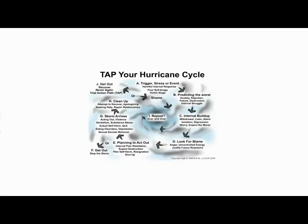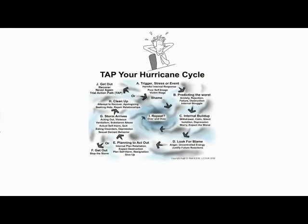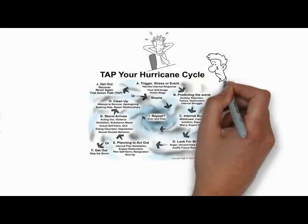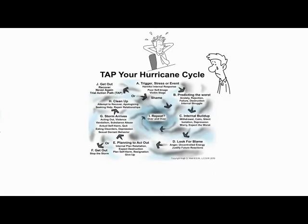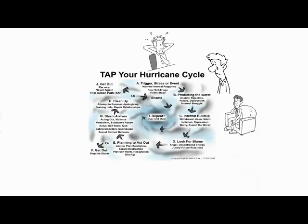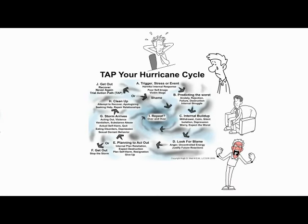To follow the hurricane cycle, we start alphabetically at the top and move in a clockwise motion down the right, toward the bottom, and then back up the left. A: Trigger — stress or event, harmful internal response, poor self-image, or victim stage. B: Predicting the worst — anxiety, rejection, failure, destruction, or internal struggle. C: Internal buildup — withdrawal, calm, silent isolation, depression, worry, or expecting the worst.